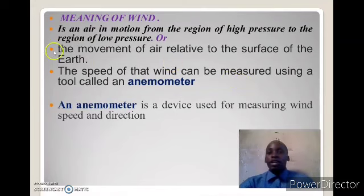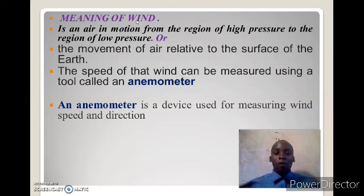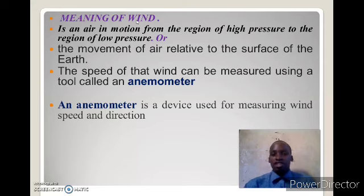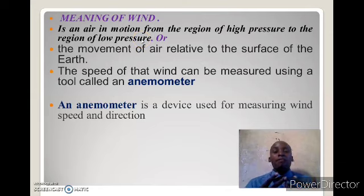Let us start our lesson today. So now, let us start with what is wind? Try to think in your brain — what is wind? There are different definitions about wind and it will depend which kind of book you are going to use. Here is a simple definition about wind: wind is an air in motion from the region of high pressure to the region of low pressure. So when we say wind, it's a movement of air from the region of high pressure to the region of low pressure.